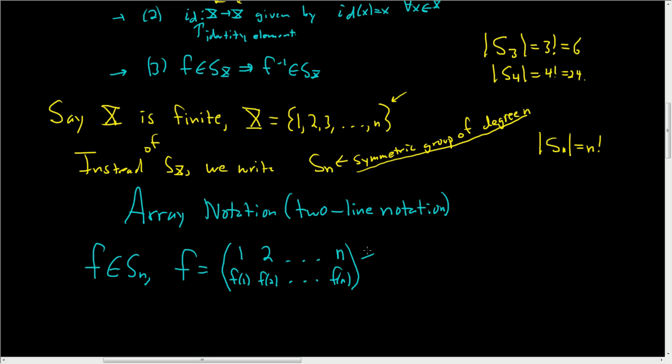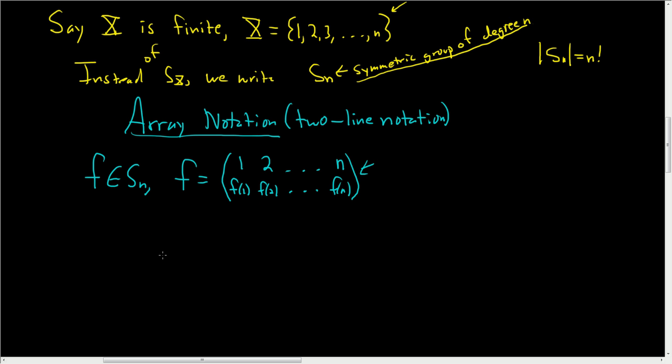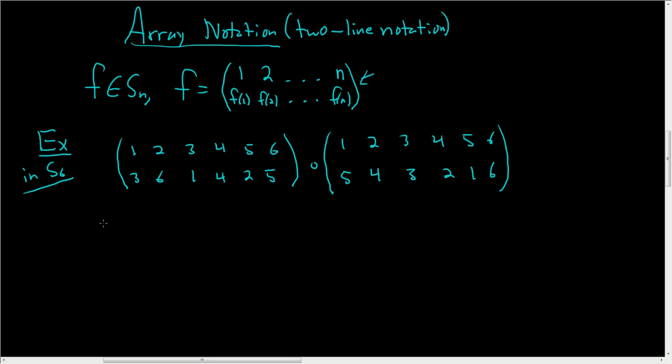How do you compose two elements using array notation? Let's do a quick example. Let's try (1, 2, 3, 4, 5, 6) going to (3, 6, 1, 4, 2, 5), and we're going to compose this element with (1, 2, 3, 4, 5, 6) going to (5, 4, 3, 2, 1, 6). These are both elements in S sub 6.